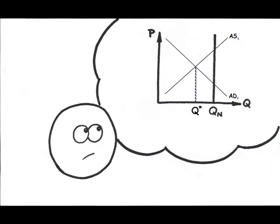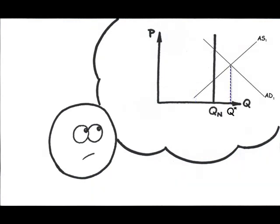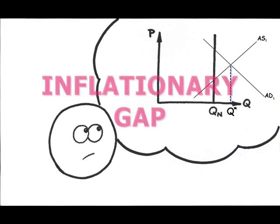And what if Q star, our equilibrium or actual GDP, is greater than potential GDP? This is referred to as an inflationary gap.